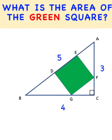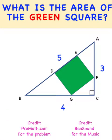Hi everyone, here is our math problem for today. We are given this 3x4x5 right triangle and this green square that is inscribed in our triangle. We would like to find what is the area of the green square.